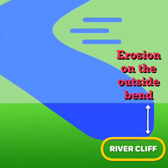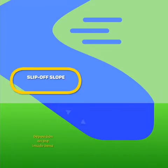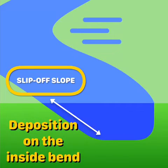Erosion of the outside bend of a meander leads to the development of a steep bank known as a river cliff. Deposition on the inside bend leads to development of a gently sloping slip-off slope.